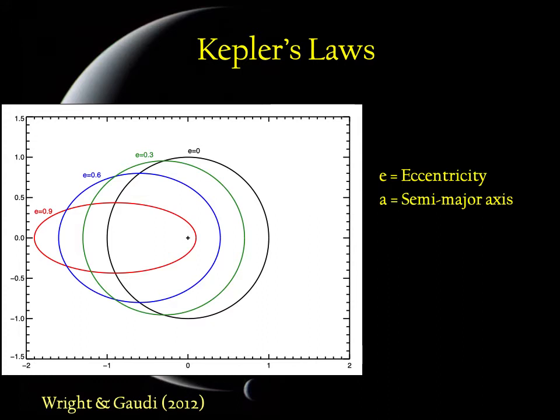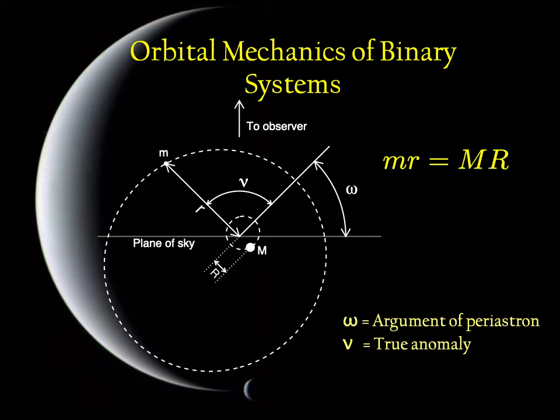So we expect that when we do a measurement we should be able to extract both of these parameters somehow from our model. We can also get the orientation of the orbit.